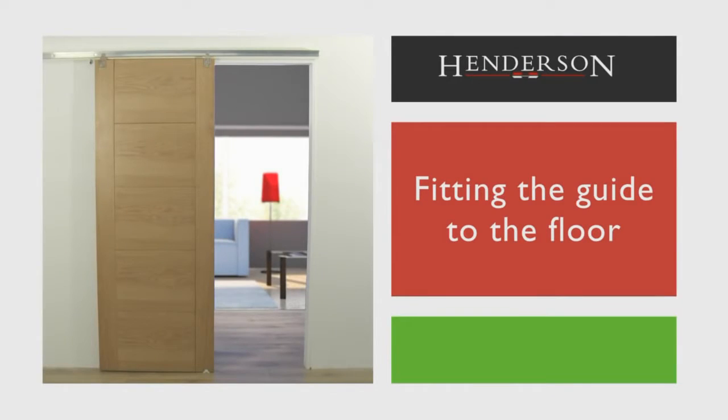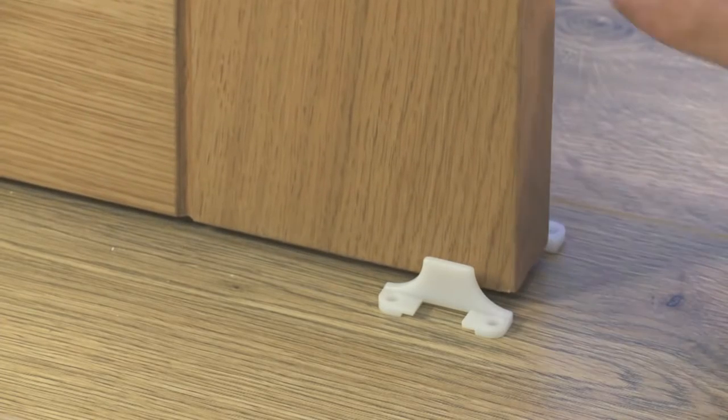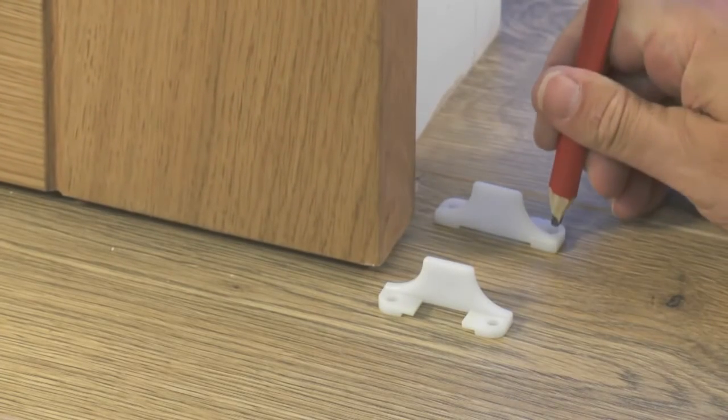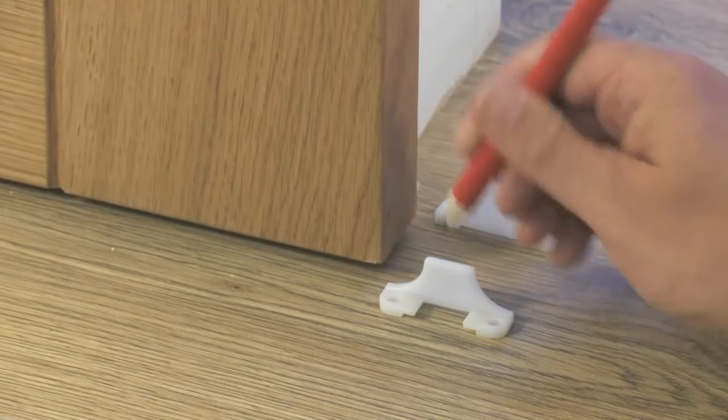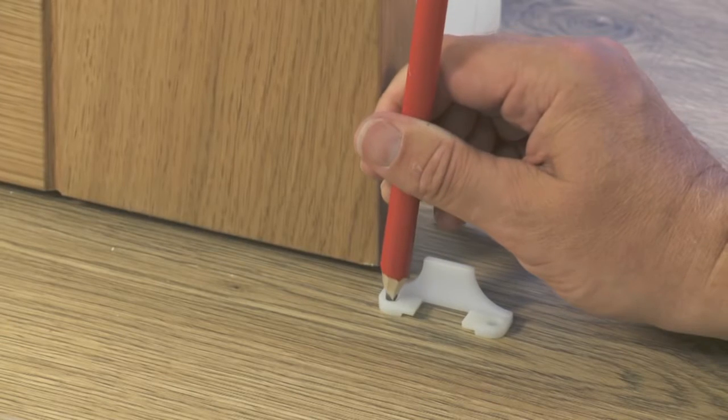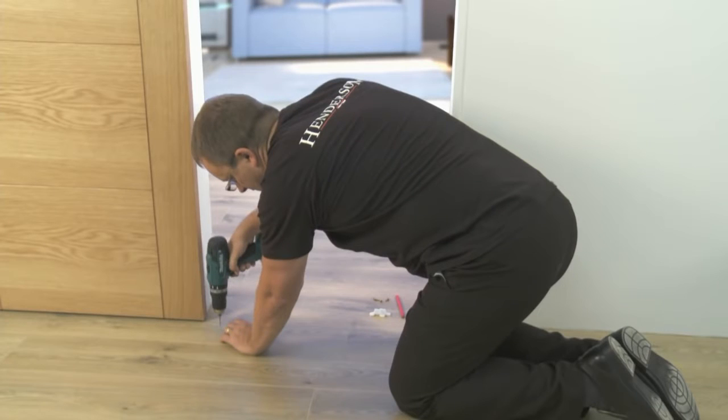Fitting the guide to the floor. Once the door is in place, we need to fit the floor guide. Place the two-part guide either side of the door and mark out the pilot hole positions. Drill the pilot holes with the electric drill if necessary.